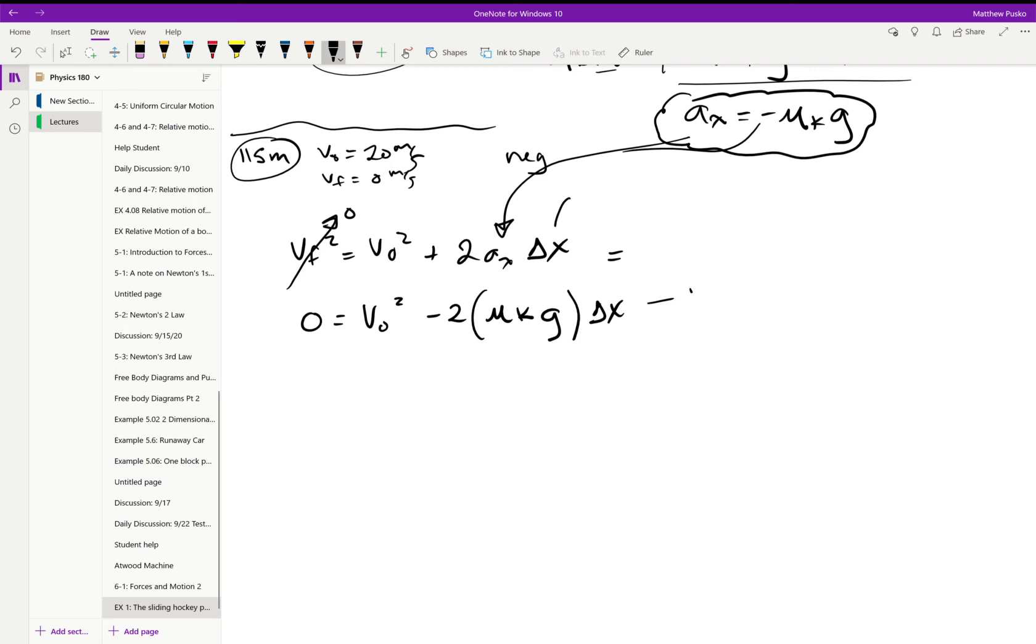Alright, we know delta x was 115. We have our initial velocity. It's just a constant. And we know this is nine point, or negative nine point eight one meters per second squared. Well, looks like we have it all. We can extract mu k. Little algebra gives us mu k is equal to v naught squared over two times gravity times delta x.